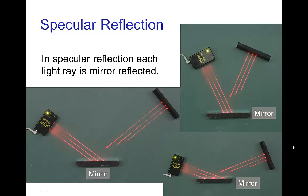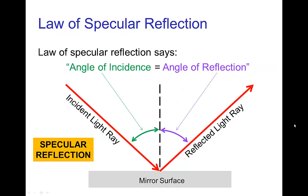Now let's talk about specular reflection. With specular reflection, the light rays that come in are reflected as they would be from a mirror instead of being scattered in all directions. Here we have three laser beams striking a mirror, and each laser beam is reflected at an angle equal to the incoming angle. We have the law of specular reflection: the angle of incidence equals the angle of reflection. Traditionally, those angles are measured relative to a line perpendicular to the surface.